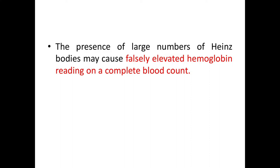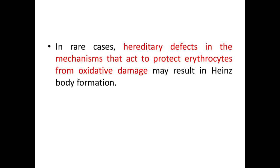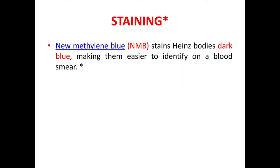The presence of large numbers of Heinz bodies may cause falsely elevated hemoglobin readings on a complete blood count (CBC). In rare cases, hereditary defects in the mechanisms that act to protect erythrocytes from oxidative damage may result in Heinz body formation. There are some mechanisms that act to protect erythrocytes from oxidative damage, and due to hereditary defects in these mechanisms, large numbers of Heinz bodies are formed.